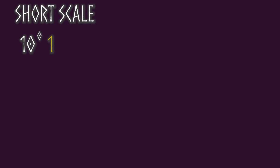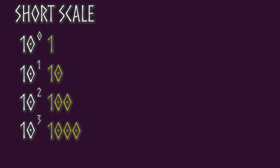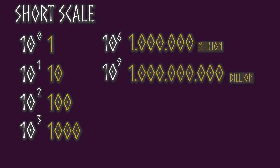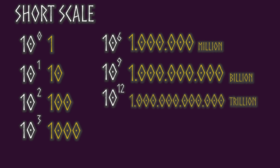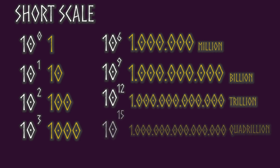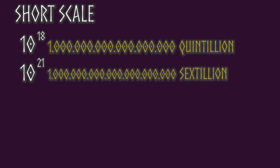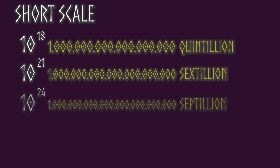Let's review the numbers in the short scale. Ten to the power of zero is one. Ten to the power of one is ten. Ten to the power of two is a hundred. Ten to the power of three is a thousand. Ten to the power of six is a million. Ten to the power of nine is a billion. Ten to the power of twelve is a trillion. Ten to the power of fifteen is a quadrillion. Ten to the power of eighteen is a quintillion. Ten to the power of twenty-one is a sextillion. Ten to the power of twenty-four is a septillion.